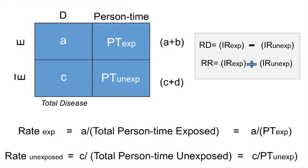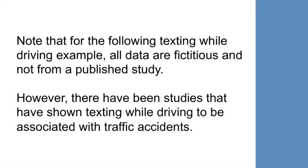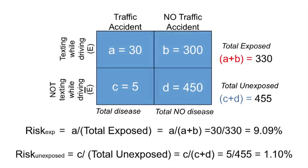Applying our rate difference and rate ratio formulas: the rate difference is A divided by person time in the exposed minus C divided by person time in the unexposed. And the rate ratio is A divided by person time in the exposed, divided by C divided by person time in the unexposed. Note that for the following texting while driving example, all data are fictitious and not from a published study. However, there have been studies showing texting while driving is associated with traffic accidents.